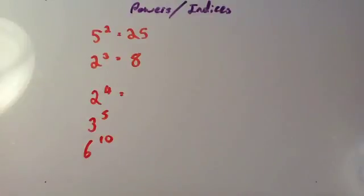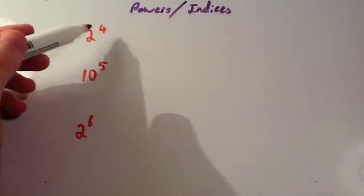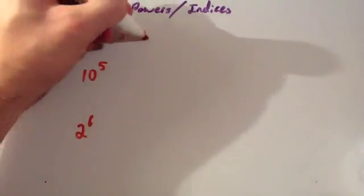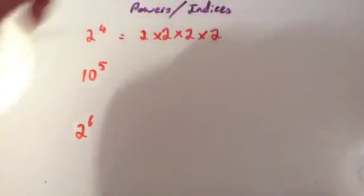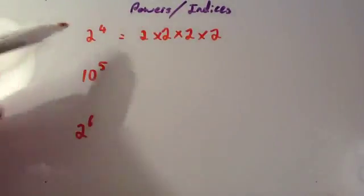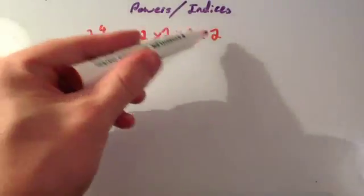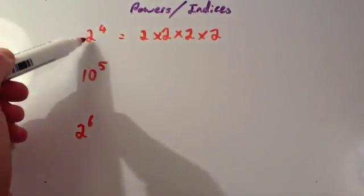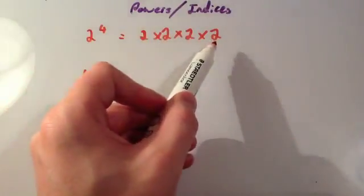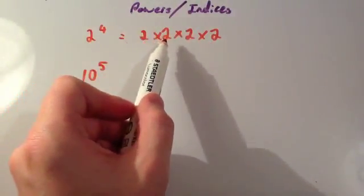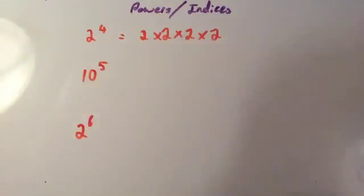We're now going to look at how to work them out. 2 to the power of 4 means 2 times 2 times 2 times 2. The 4 tells you how many of the base numbers there are, so you've got four 2s and you multiply them together. So: 2 times 2 is 4, times 2 is 8, times 2 is 16.